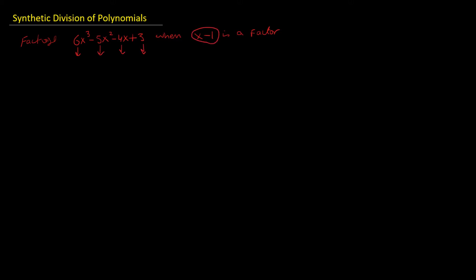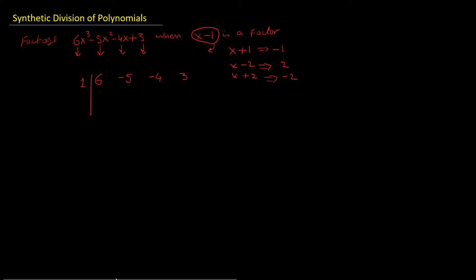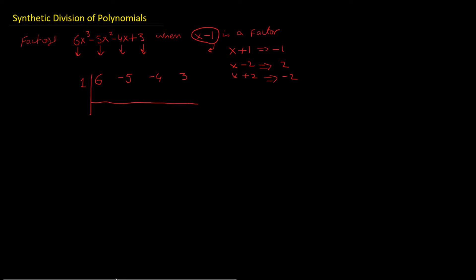First, put the coefficients of the polynomial with a little distance so we can easily do the synthetic division. Then we put a number outside. If x plus 1 is a factor we put minus 1 there; if x minus 2 is a factor we put 2 there. Since x minus 1 is our factor, we put 1 here. Then we put a line and keep some distance to write numbers.